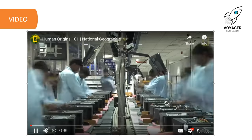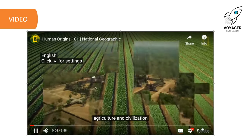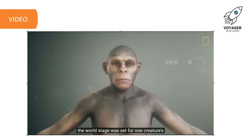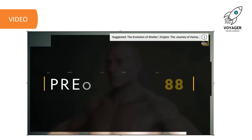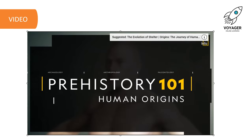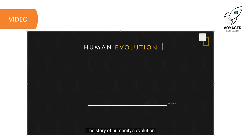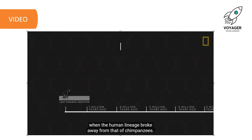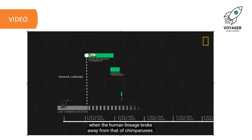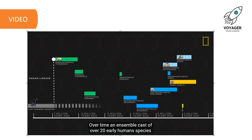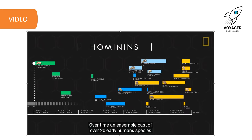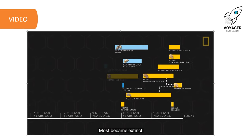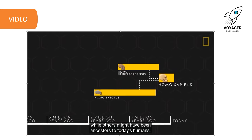Millions of years before industry, agriculture and civilisation, the world stage was set for one creature's unprecedented rise. The story of humanity's evolution began about 7 million years ago when the human lineage broke away from that of chimpanzees. Over time, an ensemble cast of over 20 early human species, or hominins, came to the fore. Most became extinct, while others might have been ancestors to today's humans.